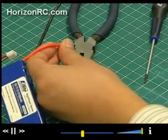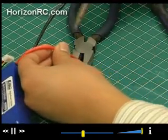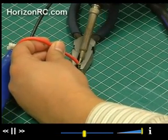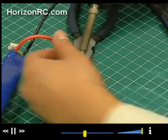Place the tinned wire into the tinned EC3 connector. Use your soldering iron to solder the two joints together. A clean and properly tinned soldering tip will help provide a cleaner solder joint.